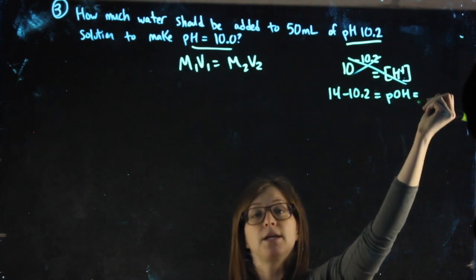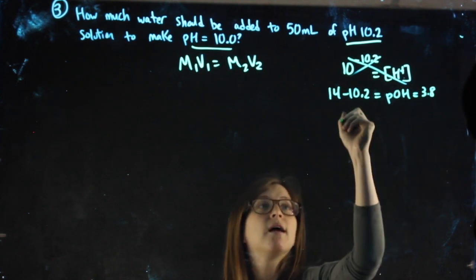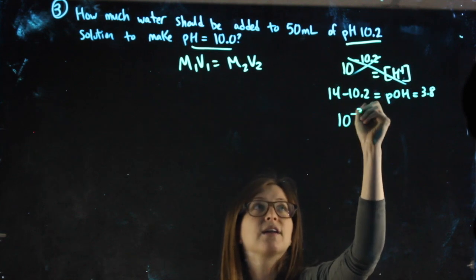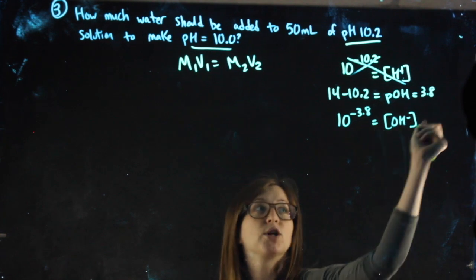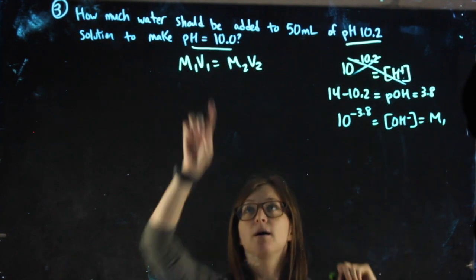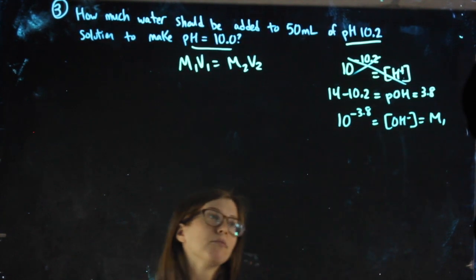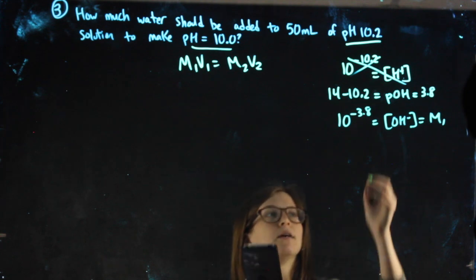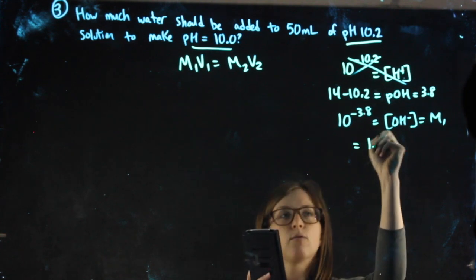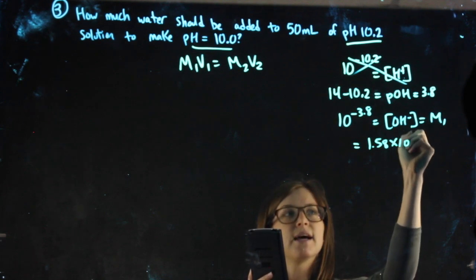That gets me my pOH. Then when I do 10 to the negative pOH, I have my OH- molarity, which I can use as a molarity in this problem. So 10 to the negative 3.8 will be my M1, 1.58 times 10 to the negative 4.